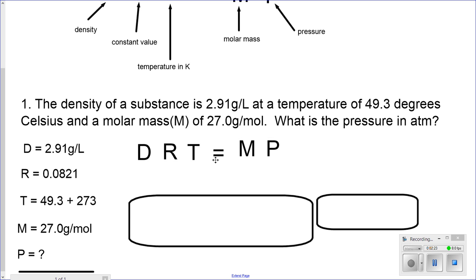The equation is as follows: DRT equals MP. I am looking for pressure. Therefore, I will move the M underneath the whole equation and leave P alone. That gives me density times value of R times temperature divided by molar mass.